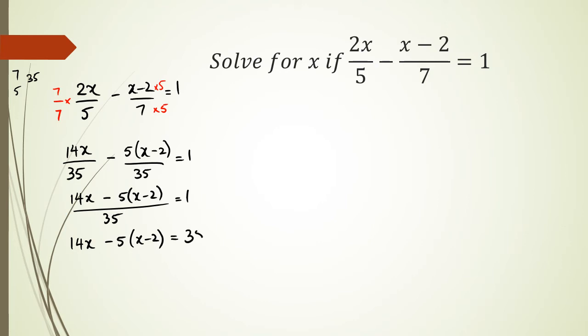So when I expand the brackets, now I'm going to get 14x minus 5x plus 10 equals 35. And simplifying this, I'm going to get 9x plus 10 equals 35, and 9x equals 35 minus 10. I'm just going to continue running out of space here.